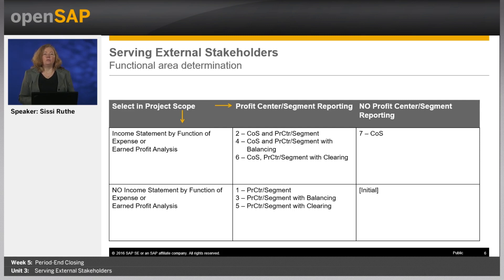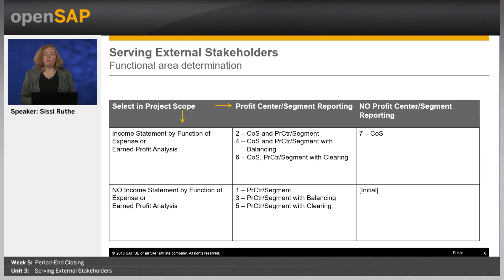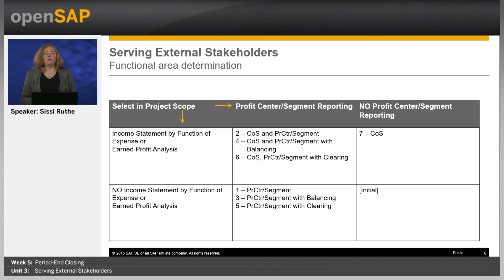Based on your decision regarding profit center and segment reporting and, additionally, if you want to create income statements by function of expense or earned profit analysis, the system activates so-called reporting principles. You need to assign one reporting principle to each of your set of books. The table gives an overview of which reporting principle belongs to which decision. If you are not sure which degree of profit center and segment reporting you will need in future, you can choose reporting principle 1 or 2. The advantage of these reporting principles are higher simplicity, better performance and less required table space than reporting principles of higher degrees.